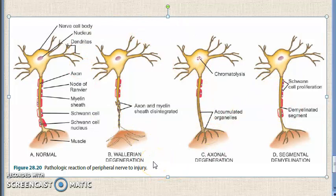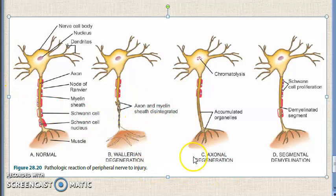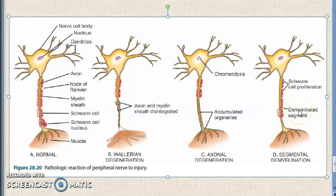To summarize: in the peripheral nervous system if there is an injury, there could be Wallerian degeneration with some regeneration possible, axonal degeneration where axonal integrity is lost, and segmental demyelination followed by remyelination. Those are the high-level details; more depth can be read from your textbook.